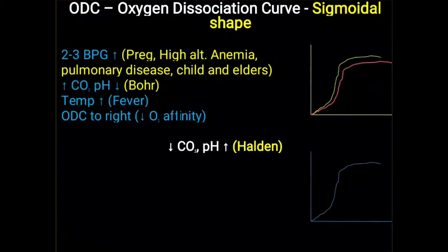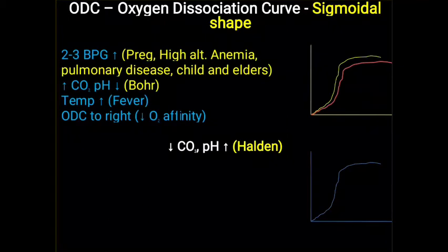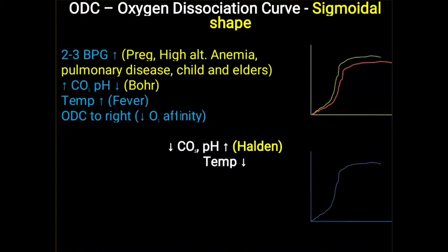Oppositely, shifting of the oxygen dissociation curve towards the left side is also observed. Here, hemoglobin has a high affinity towards oxygen. This increased affinity occurs particularly in the lung, where there is high partial pressure of oxygen. Under this condition, CO₂ is eliminated from hemoglobin into the respiratory system, pH increases, and under the Haldane effect, oxyhemoglobin is generated. In hypothermia, the overall demand for oxygen is decreased, also leading to increased affinity of oxygen to hemoglobin.